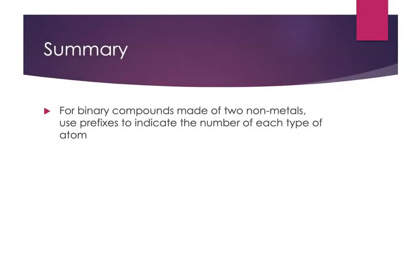As a summary, when we're naming binary compounds made of two nonmetals, we use prefixes to indicate the number of each type of atom. You have to be really careful because once students learn this system, they want to name all compounds like this — even ionic compounds made from a metal and a nonmetal or containing polyatomic ions. That is not okay. No prefixes for ionic compounds. So be really careful and don't fall for that trap.